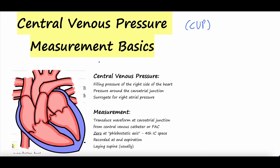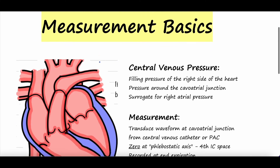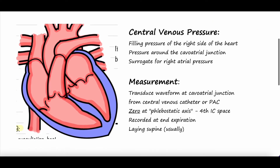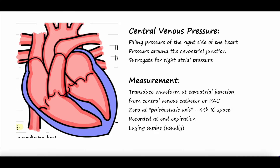Starting with what CVP is. CVP, aka central venous pressure, is just what it describes. It's the central pressure of the venous system — venous being veins, central being close to the heart, and pressure being pressure. So it's the pressure in the veins close to the heart.